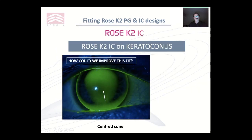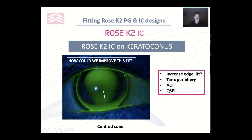Here's an IC on keratoconus — here's the cone, it's a relatively central cone. How could we improve the fit? Could we increase the edge lift? Yes, but it would also increase it here. What about a toric periphery? That's going to increase the edge lift here and here but shut it down here — that looks like a good option. ACT would only be considered if we didn't have tight areas at the sides. So again here, a toric periphery with an increased edge lift would be my option.